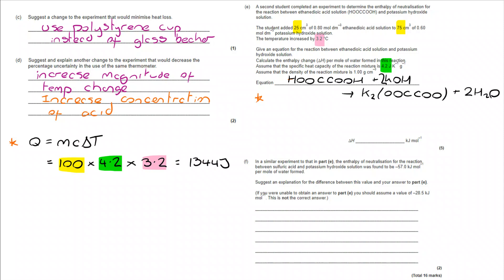Now, if you then consider that we are going to have to convert that to kilojoules per mole, we need to know how many moles we're dealing with. Let's start with the moles of ethane diolic acid. I've been given a concentration, 0.8, and a volume, which again I've converted to decimetre cubed. That takes me to 0.02 moles of ethane diolic acid.